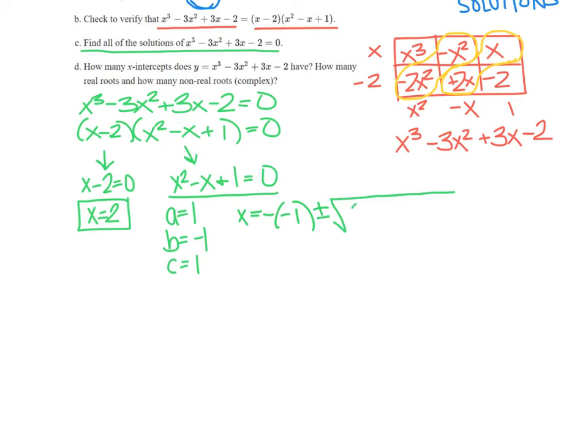And so plugging in we have x equals the opposite of negative 1 plus or minus the square root of b squared or negative 1 squared minus 4 times a or 1 times c, which is 1. And all of that over 2 times a or 2 times 1. So x equals 1 plus or minus the square root, negative 1 squared, negative 1 times negative 1 is positive 1, minus 4, all that's under the square root, all over 2.